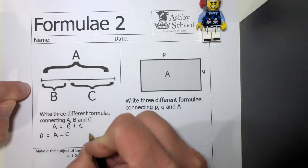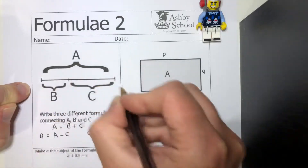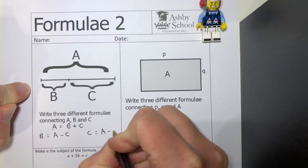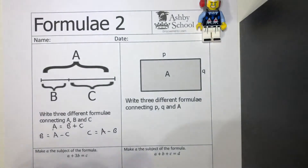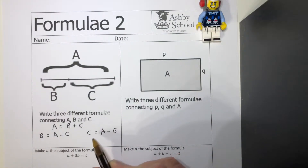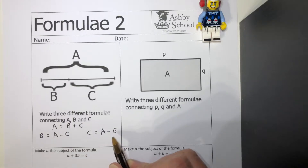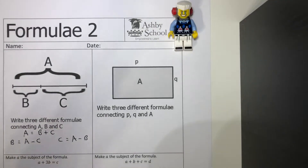Or if you wanted to know what c was, c equals a take away b. It's very important with takeaways that you get the order right - c equals a take away b is right, b take away a is not right. You've got to get them the right way around to make this work.